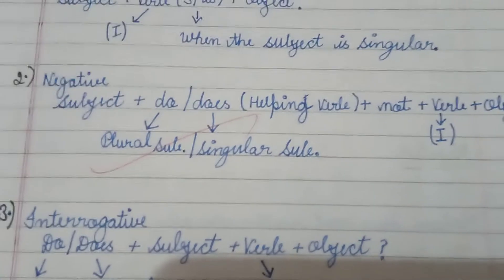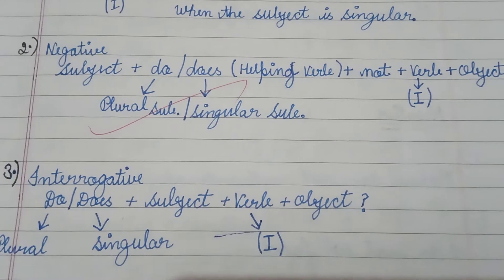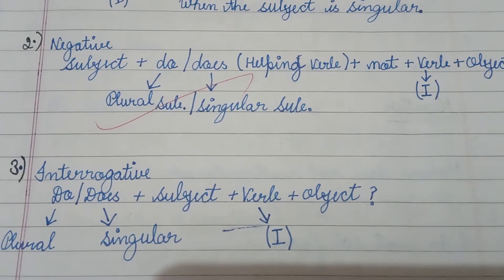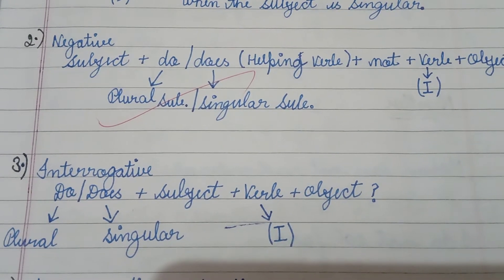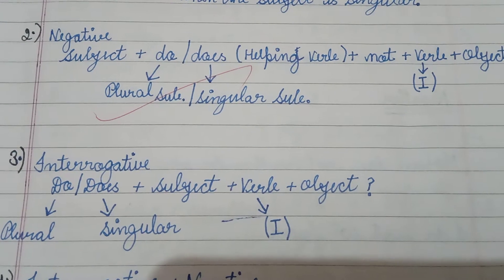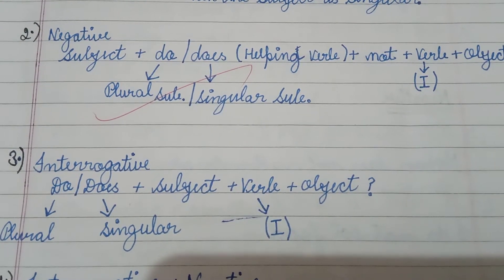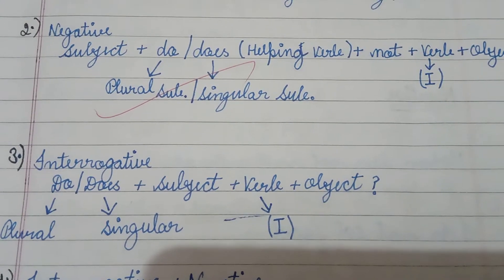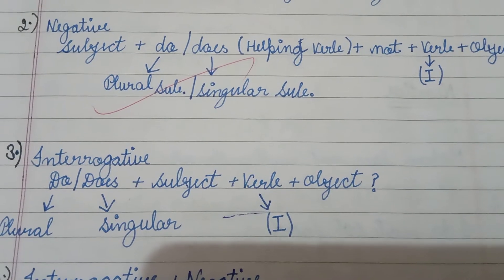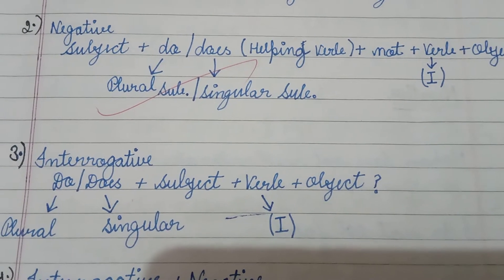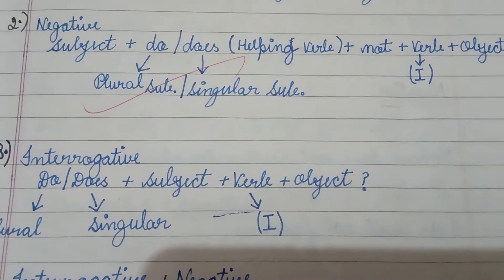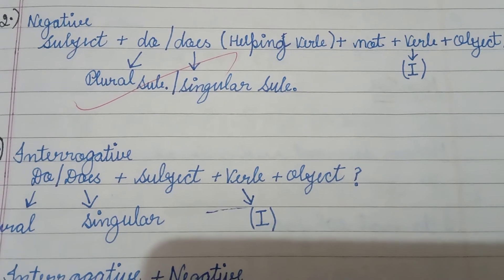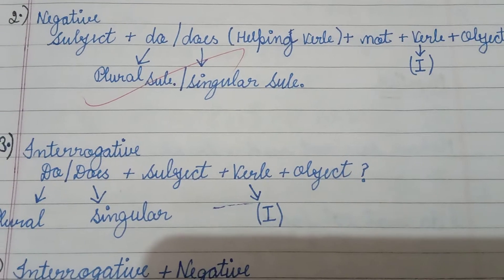Coming on to the third type which is interrogative statement. In interrogative statements, we take do and does as the questioning verbs. The helping verbs used in a particular tense will be taken as the questioning verbs in the interrogative and interonegative statements. For interrogative, we will have do or does depending on the subject plus subject plus verb first form plus object and then question mark will be following the statement or the question.